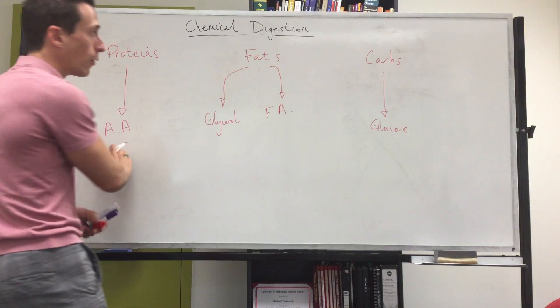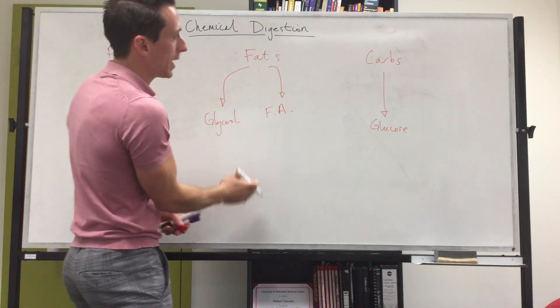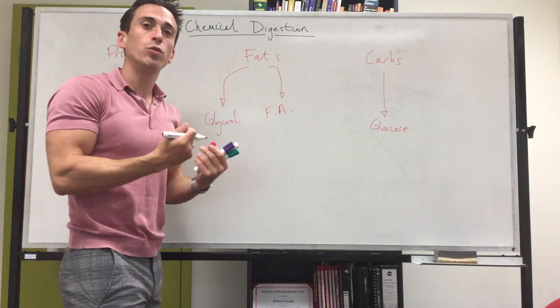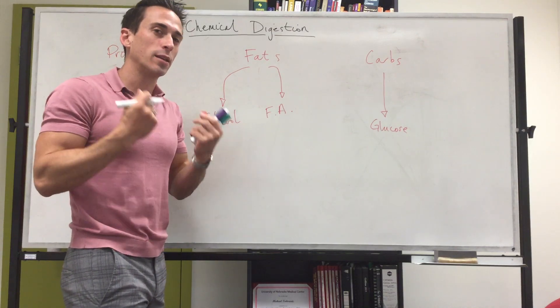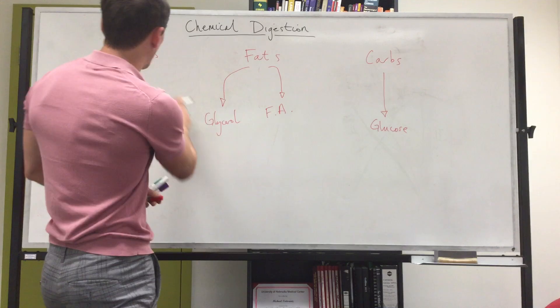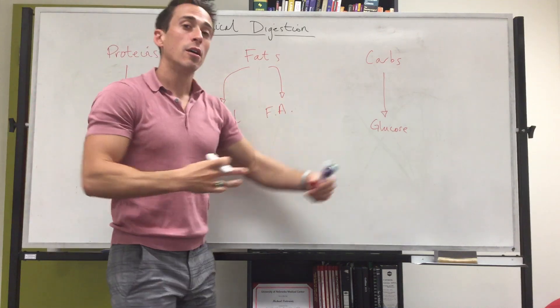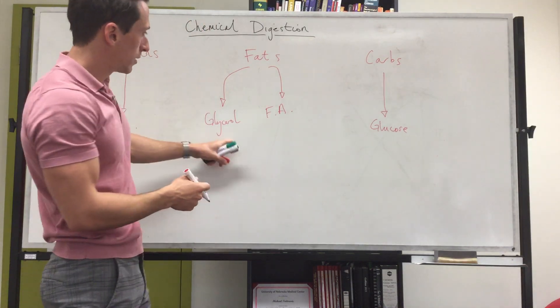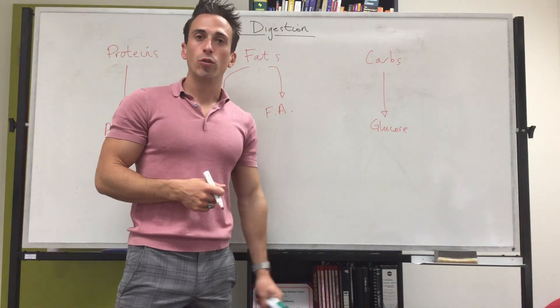The reason why we want to break proteins down into amino acids, fats down into glycerol and fatty acids, and carbohydrates down into glucose is because we want to use them in whatever way we think is best. We can't absorb proteins, fats, and carbs from our small intestines into the bloodstream—we can only absorb them when they're in these micronutrient forms.